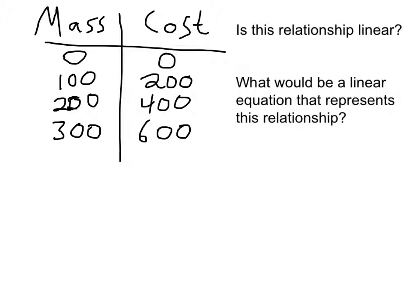So I'm looking at this linear relationship here where I'm comparing mass and cost — mass here, cost here. The first question we're asking is: is this relationship linear? The way you can tell that something is linear — we've talked about this a few times — is whether the numbers in this column go up by the same amount every time, and if the numbers in this column go up by the same amount every time. They don't have to go up by the same number as the other column, but as long as they both increase at an equal rate every single time, then we do in fact have a linear relationship.